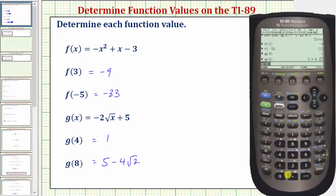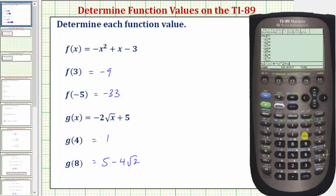The second method for determining function values is how we often find function values on the TI-84 graphing calculator. We press diamond F1 for the Y equals screen, and enter f of x in y one and g of x in y two. Press the up arrow, clear the old function, and enter negative x raised to the power of two plus x minus three, enter. Y two is equal to negative two times the square root of x plus five, enter.